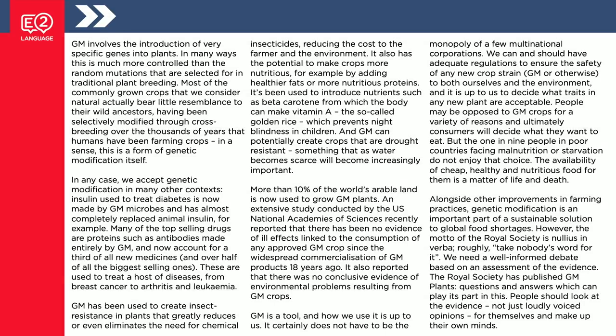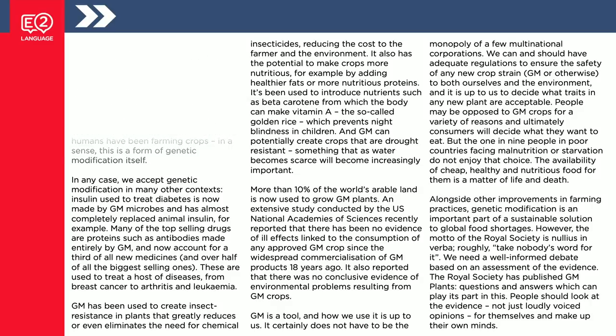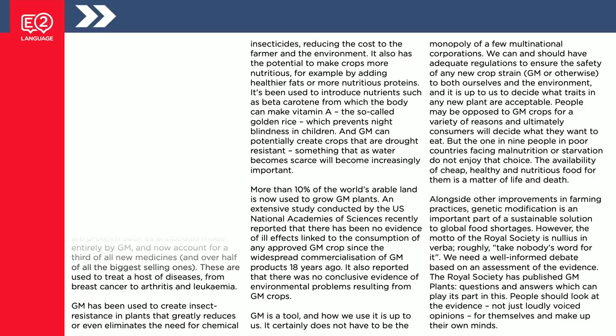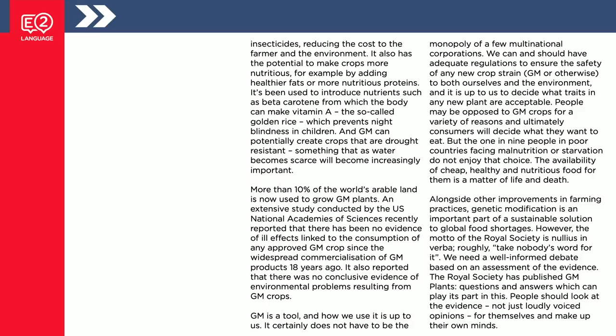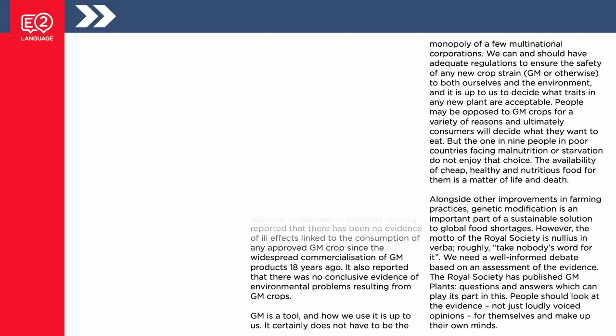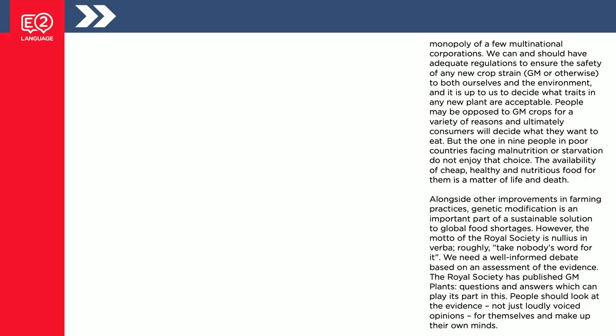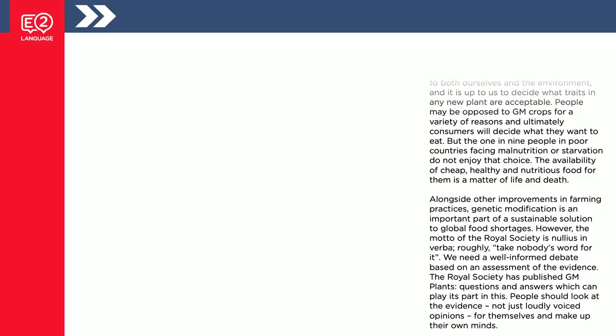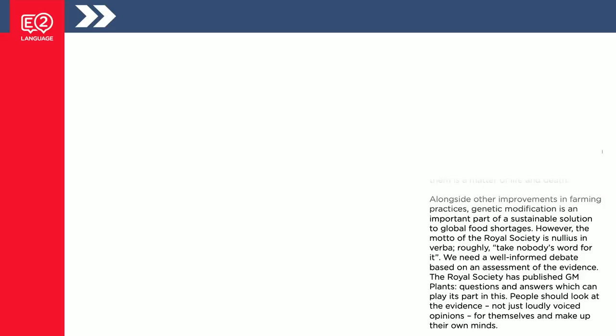Here's the next page. So that was one minute. How did you go? What words did you notice? Did you see how the text was organised? Maybe you saw words like GM, genetic modification, EU, farming, crops, health, environment. Did it help you?